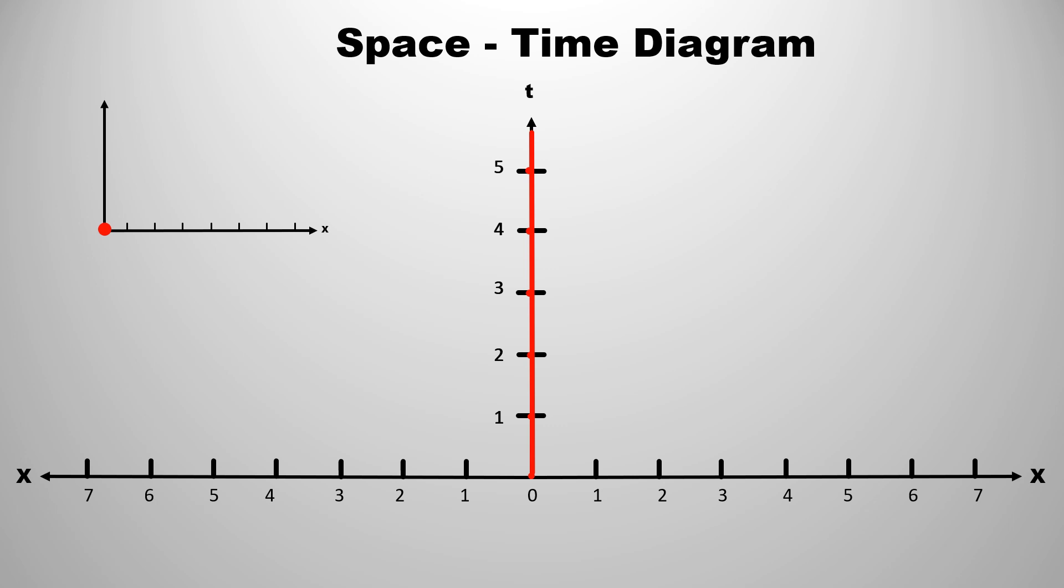Let us understand this with an example. Suppose there are two observers A and B. Observer A is at rest and B is in motion with a velocity v to the right side. So, since observer A is at rest, its world line will coincide with the time axis. Observer B is moving with velocity v to the right side with respect to A, then its world line will be to the right side.